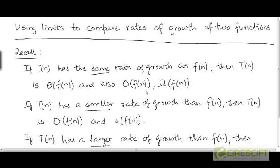O was defined to be the set of functions that either has the same rate of growth as f or has a smaller rate of growth than f. So if t has the same rate of growth as f, t is going to be a member of O. Similarly, Ω also contains functions that have the same rate of growth as f, besides functions that have a larger rate of growth than f. So if t has the same rate of growth as f, it is going to be a member of these three sets.